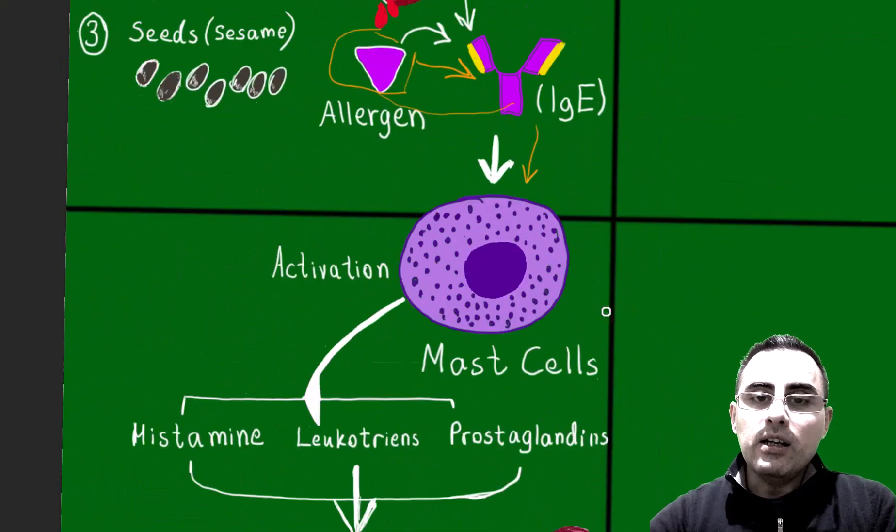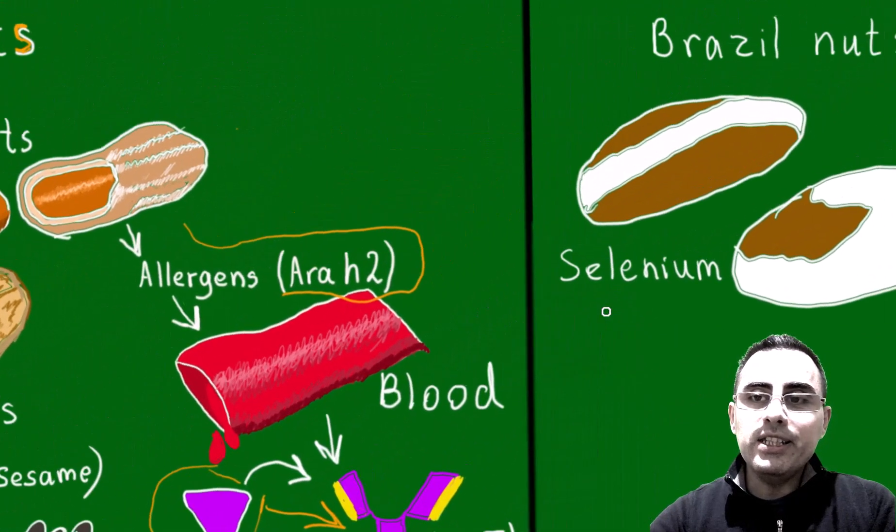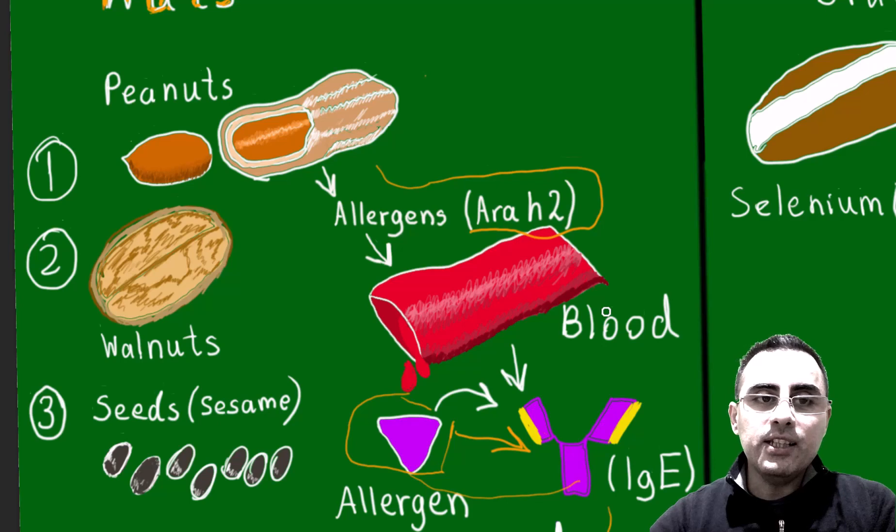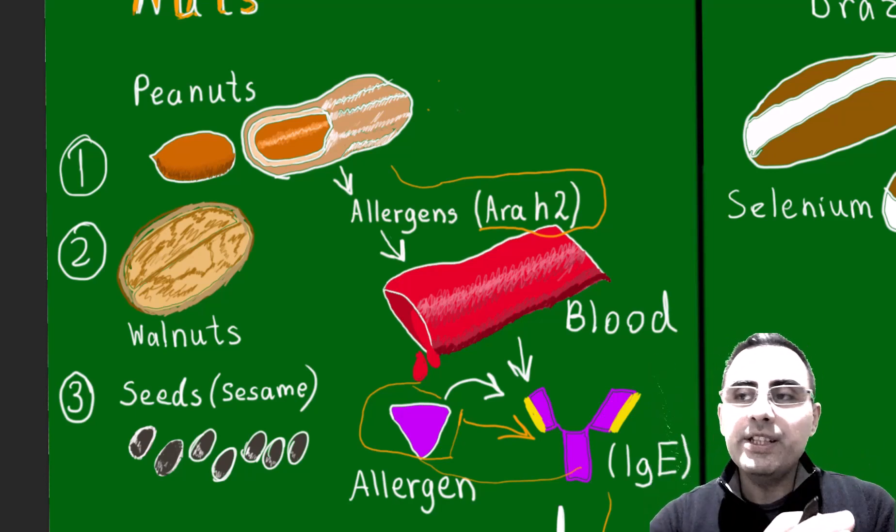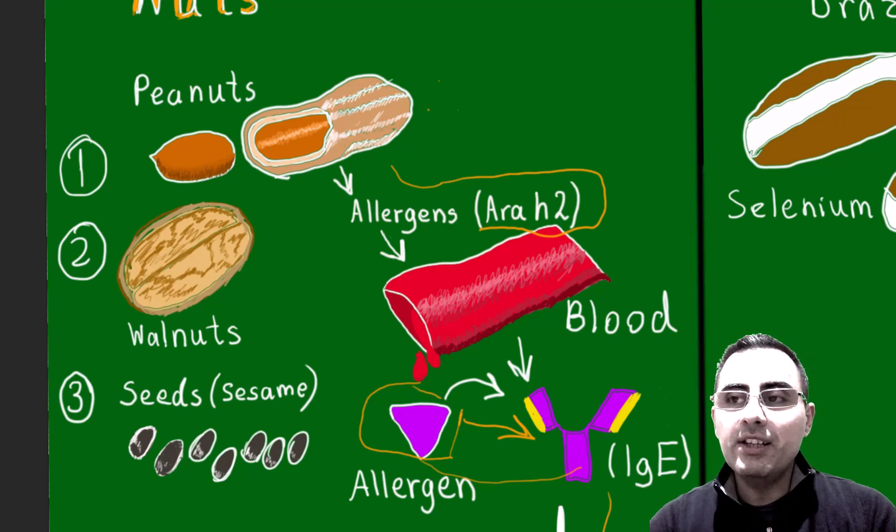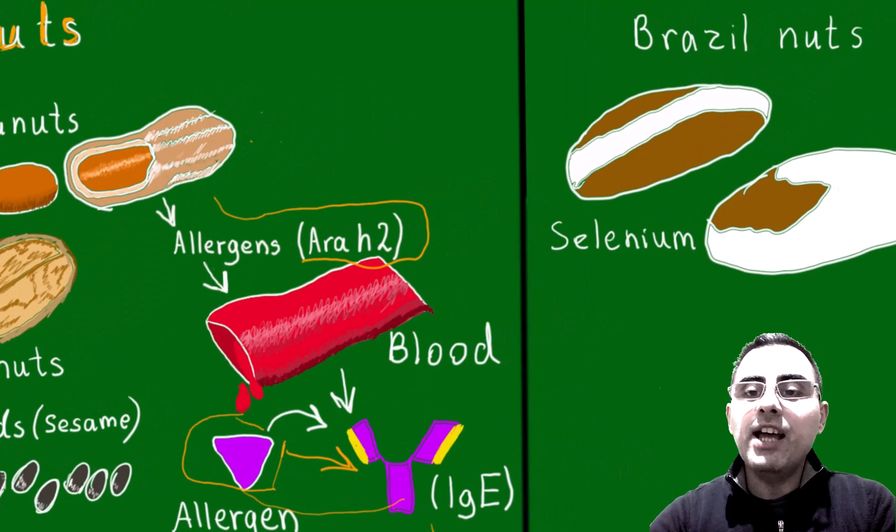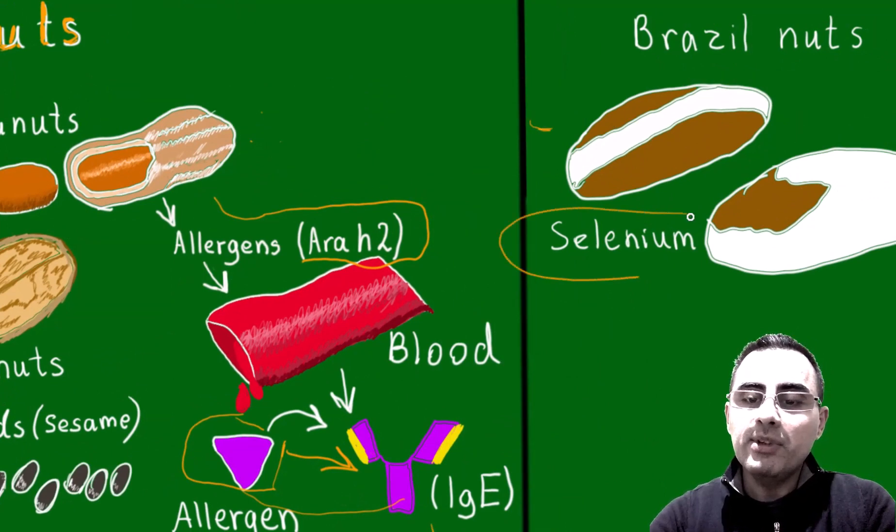Now let's explain why Brazil nuts are special. We already said that peanuts especially cause allergic reactions. If peanuts cause breathing discomfort or breathing difficulty, it's an allergic reaction. But if Brazil nuts cause symptoms, it's because of selenium. Selenium is a microelement or trace element and it's important for our body.